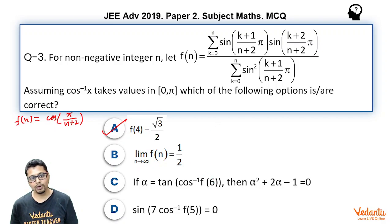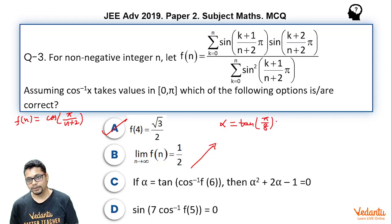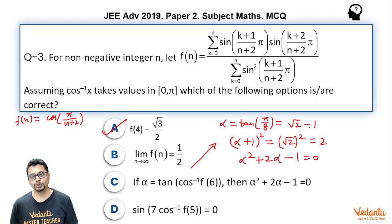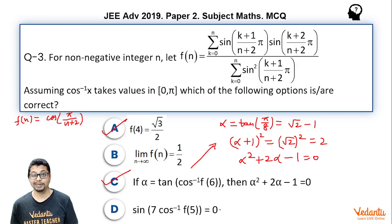For f(6): cos(π/8), so cos⁻¹(f(6)) = π/8. Let α = tan(π/8), then (α+1)² = 2, so α² + 2α + 1 − 2 = 0, giving α² + 2α − 1 = 0. Indeed tan(π/8) = √2 − 1 satisfies this equation, so that option is correct. For f(5): cos(π/7), so cos⁻¹(f(5)) = π/7, and 7 × π/7 = π; sine(π) = 0, so that option is also correct. Therefore the answer is options A, C, and D.